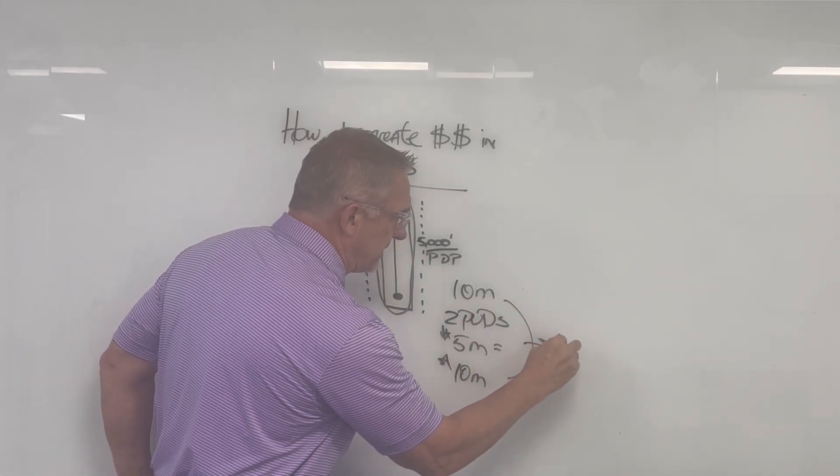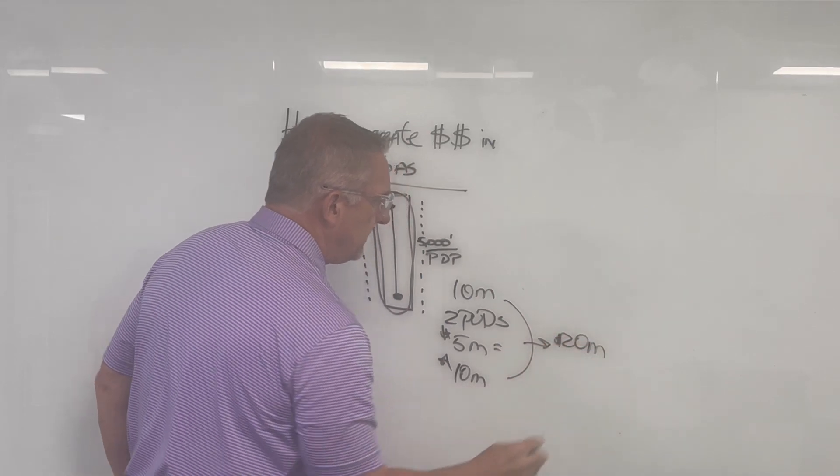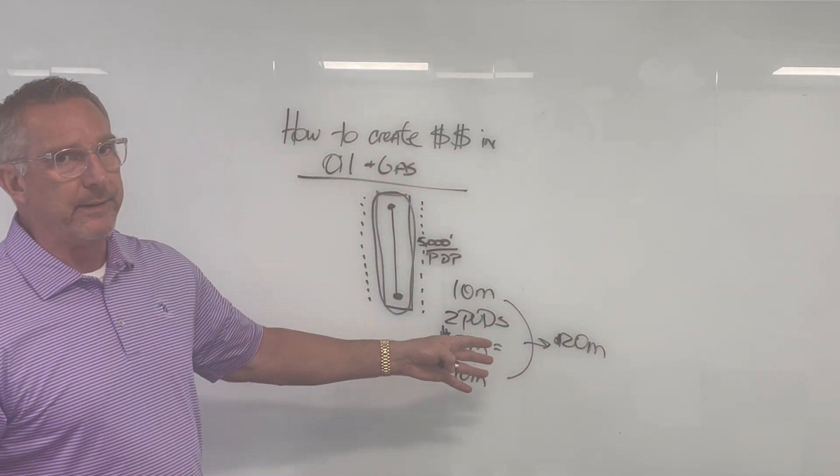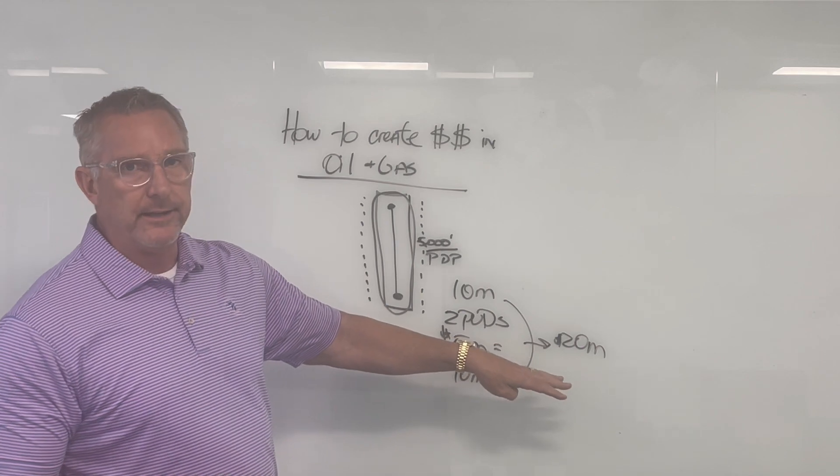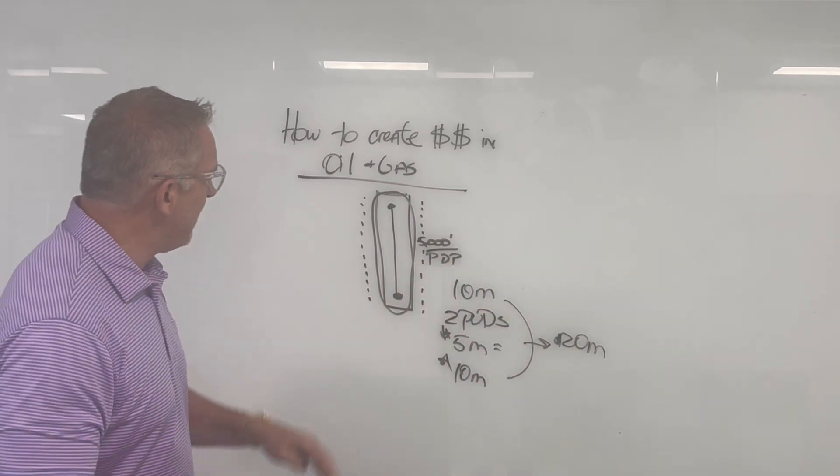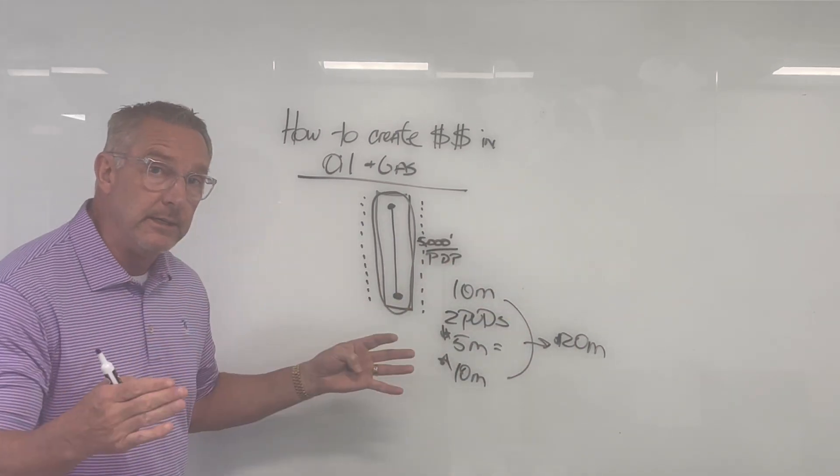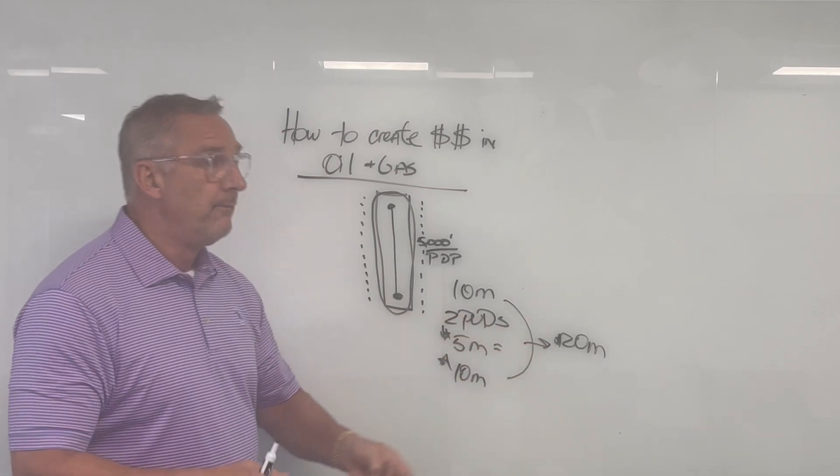These two added together are obviously $20 million, and Exxon or anybody else is not going to be interested in a $20 million deal. That's just not what they're doing. So what we have to do is we have to lease enough land to drill 20 of these, 40 of these, 60 of these.